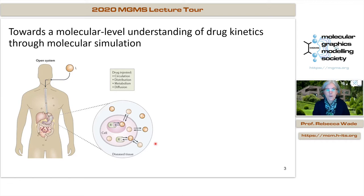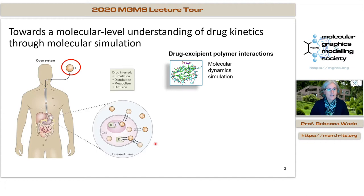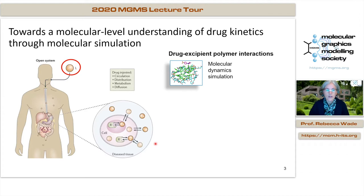That involves thinking about the whole process from the drug molecule being ingested through to it being bound to its target receptor and beyond. In order for a drug to be suitably absorbed, it has to be appropriately packaged, and one way of doing this is to add excipient polymers. Traditionally, suitable polymers for particular drugs are chosen by trial and error, but we're trying to use molecular dynamic simulations to choose appropriate polymers for a given drug.